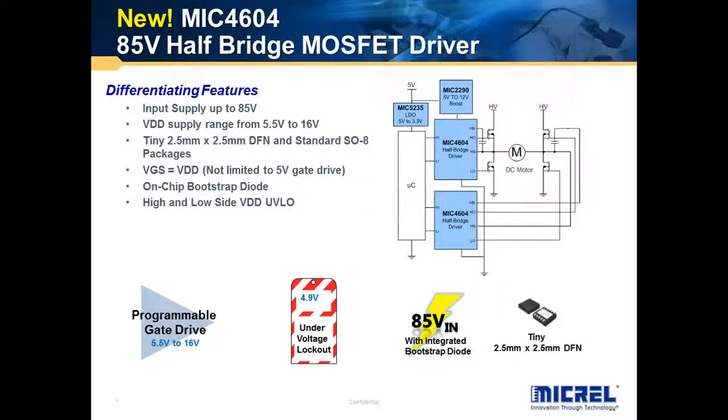So let's get started. The 4604 is an 85 volt device dedicated for motor drives and has four key features. It has a programmable gate drive and what's key here is it can drive as low as 5.5 volts, which I'm going to give you a demonstration.